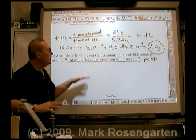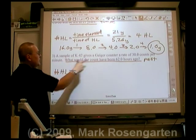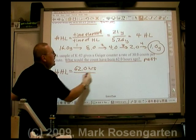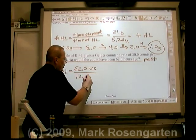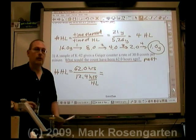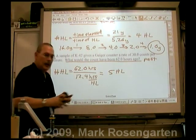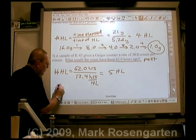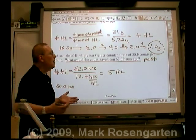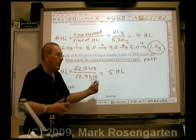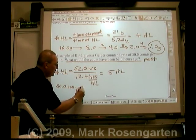For the second problem, we find how many half-lives have gone by: time elapsed of 62.0 hours divided by the half-life of potassium-42, which is 12.4 hours — that gives exactly 5 half-lives. We're starting with 30.0 counts per second and trying to find what the count would have been in the past. Since it was cut in half five times to reach 30 counts per second, to go back to the past we do the opposite and double it five times.